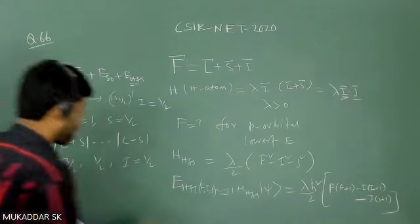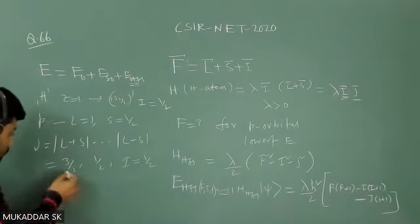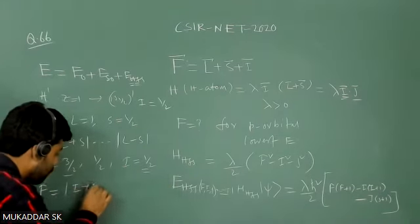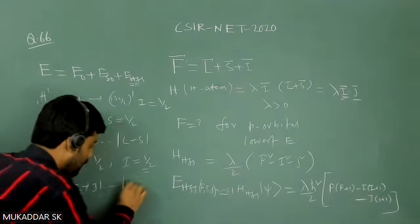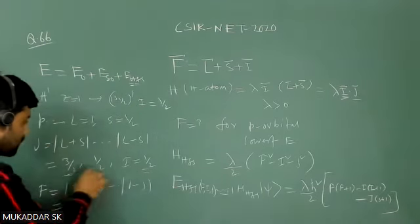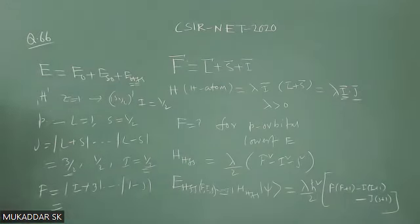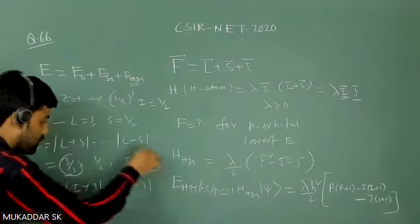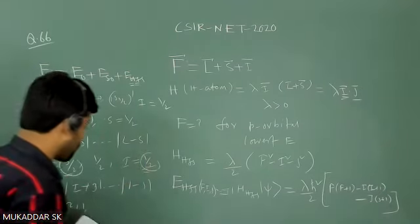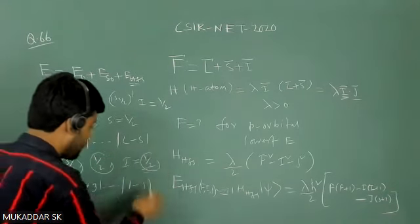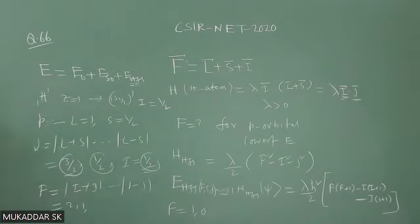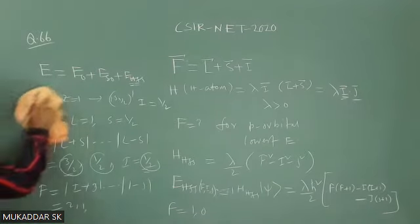With I = 1/2, if you take J = 3/2, then F ranges from |I+J| to |I−J|, giving F = 2 or 1. Similarly, if you take J = 1/2 and I = 1/2, that combination gives F = 1 or 0. So these are all the possible values of F, I, and J. We will now calculate E_HFS for each combination to find which gives the lowest energy.